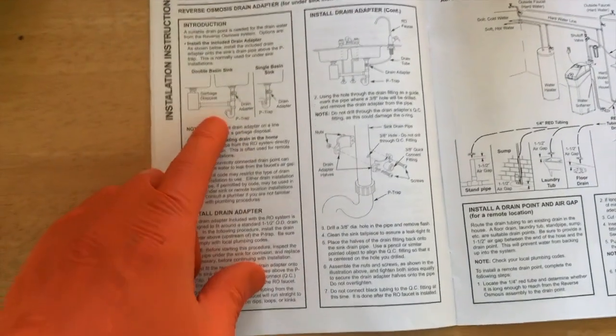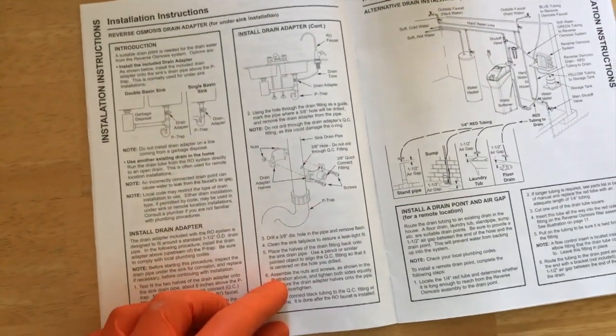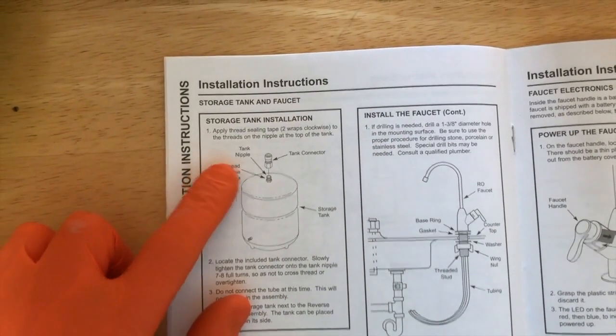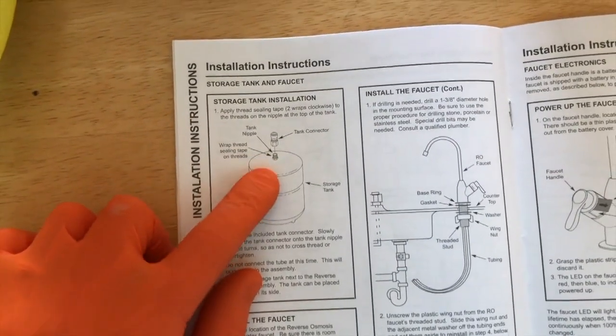Back to the owner's manual, we've completed this step - install the drain adapter. Read through the notes and instructions, verify you didn't miss anything before going on to the next step. Next is the storage tank - we need to apply threaded tape or Teflon tape to the thread on top of the storage tank and connect the tank connector. All right YouTubers, we're halfway done, part one is complete. Now it's on to part two.